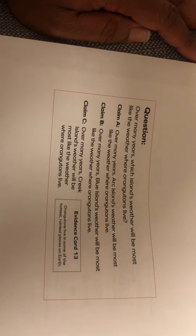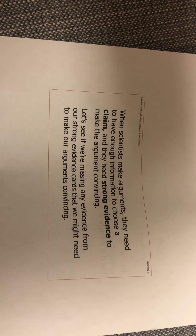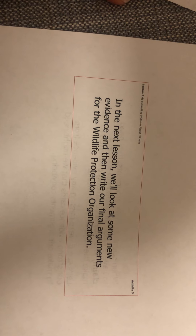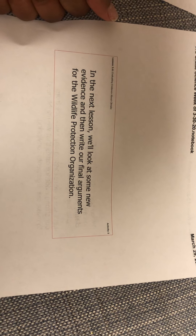Complete the notebook page — you can do that on a separate sheet of paper or print it and upload it into Google Classroom. When scientists make arguments, they need to have enough information to choose a claim, and they need strong evidence to make the argument convincing. In the next lesson, we'll look at new evidence and then write our final arguments for the Wildlife Protection Organization. Boys and girls, where are we going to relocate the orangutans? You are going to help me because you are my fellow scientists, meteorologists, and zoologists. Love you guys, and I will talk to you soon.